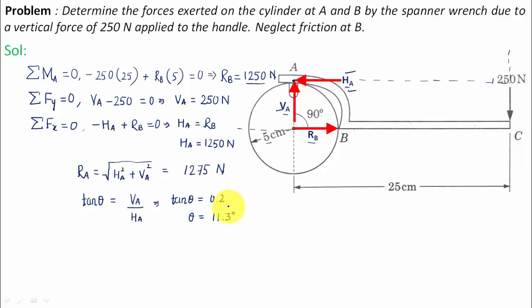To be very specific, let me show you what this means. This is HA in this direction at 1250 newtons, and this is VA in the upper direction at 250. The resultant will be somewhere along this direction - this is RA at an angle of 11.3 degrees with the horizontal.